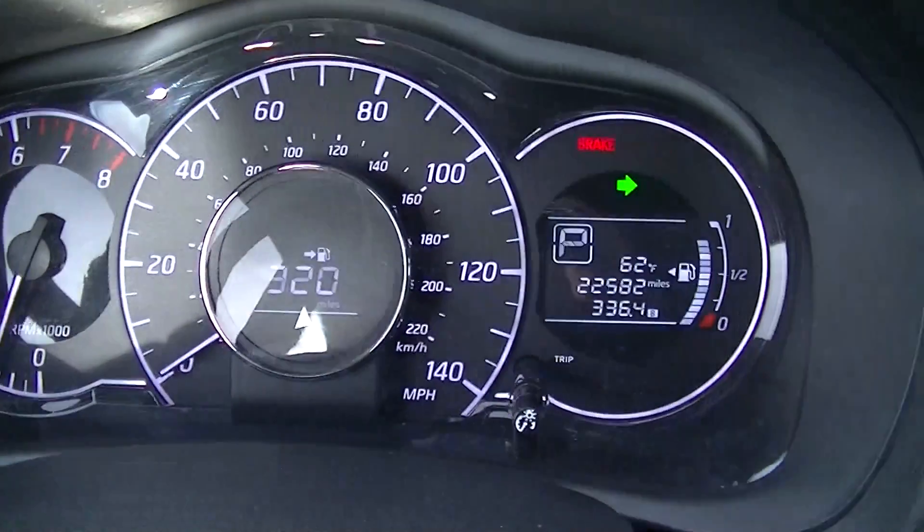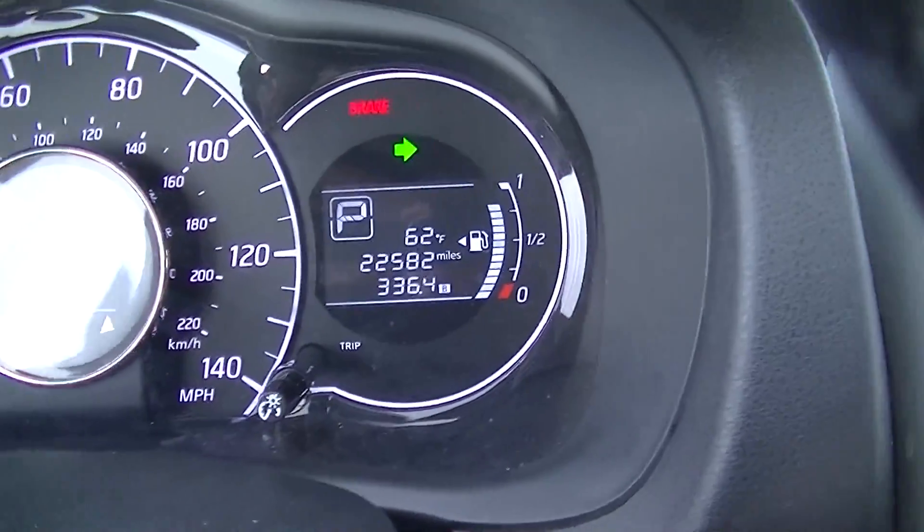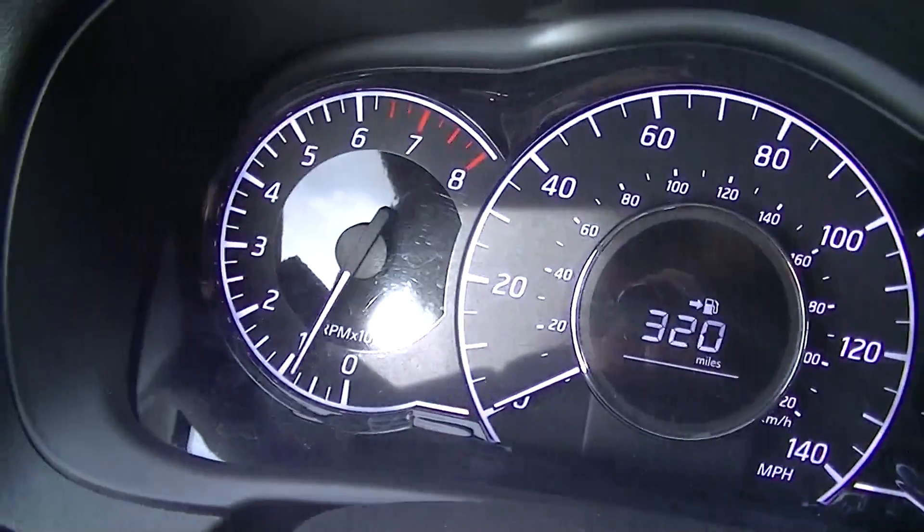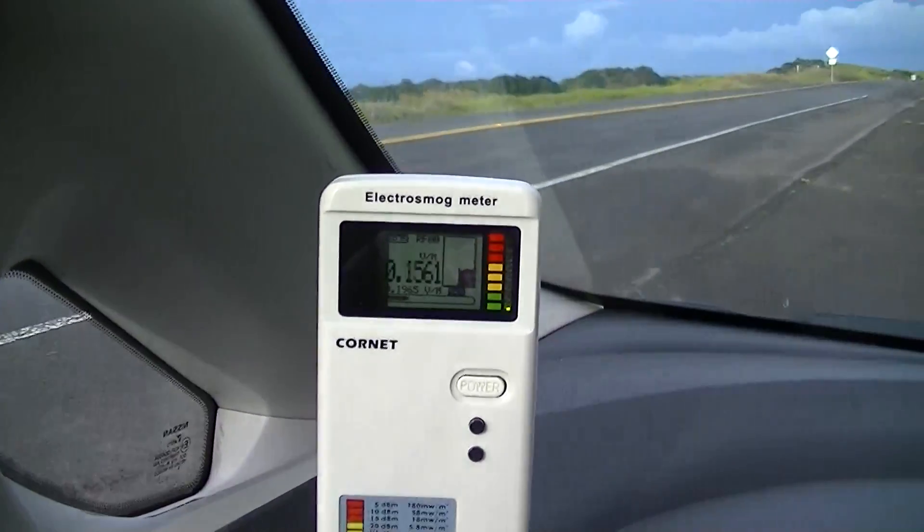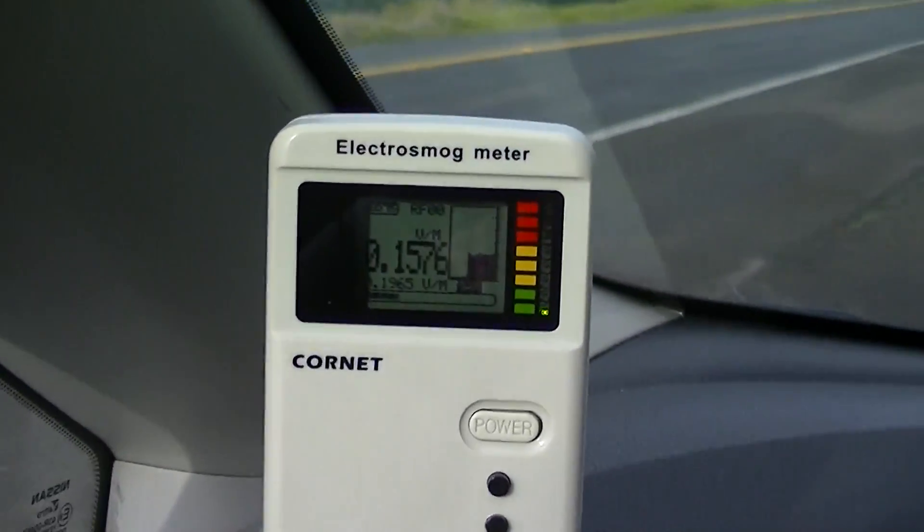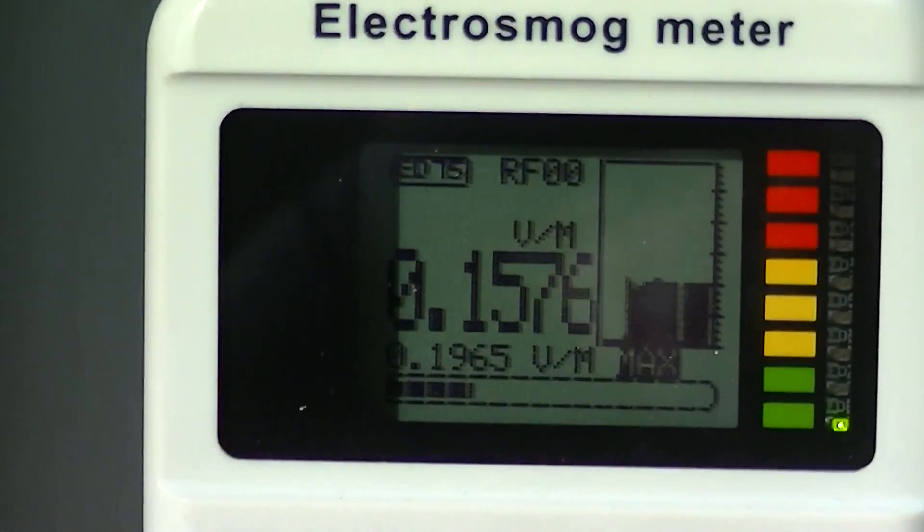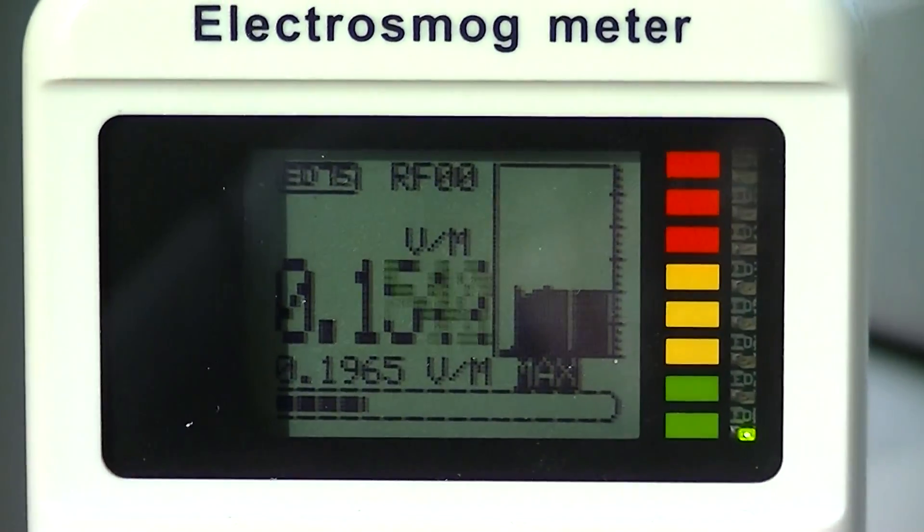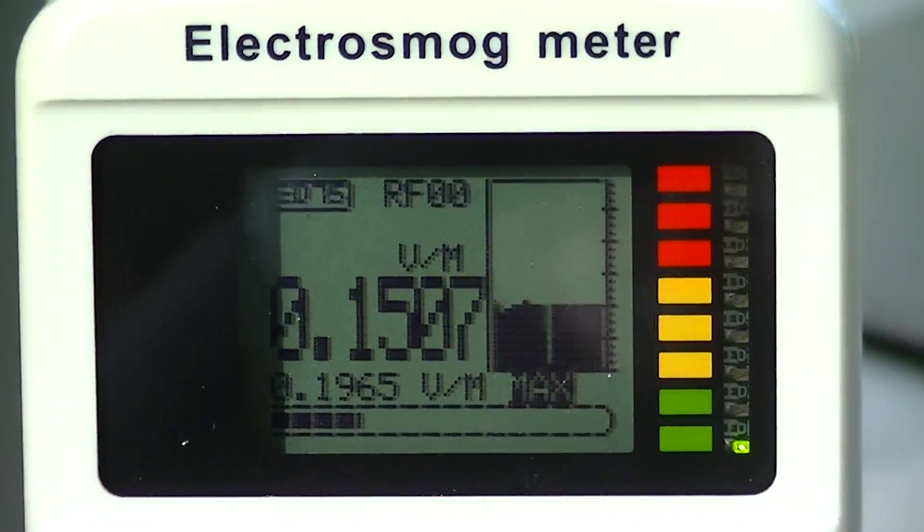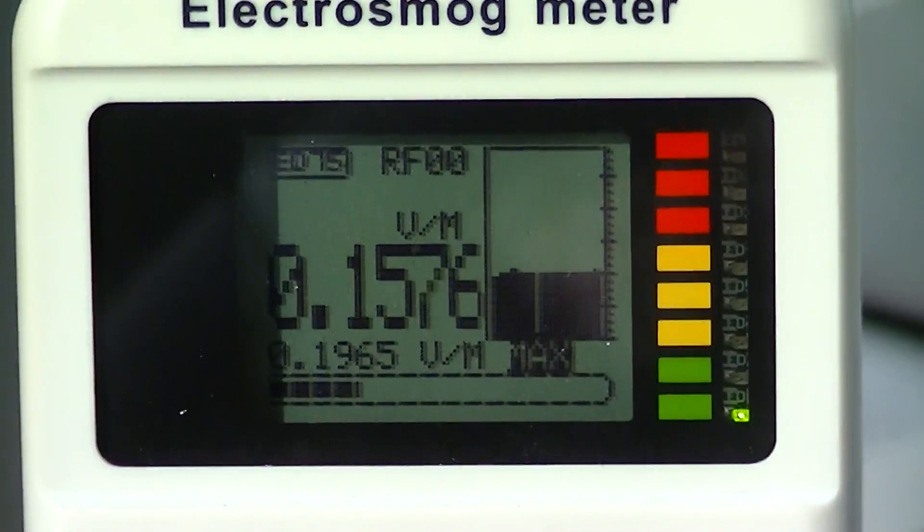So our car is running. You'll notice that it's got a digital display as well as the analog dials. So let's look at our radio frequency meter. The radio frequency meter is basically saying that there's a lot of radio frequency in this car and it's coming from the car. And the last time I will turn it off.